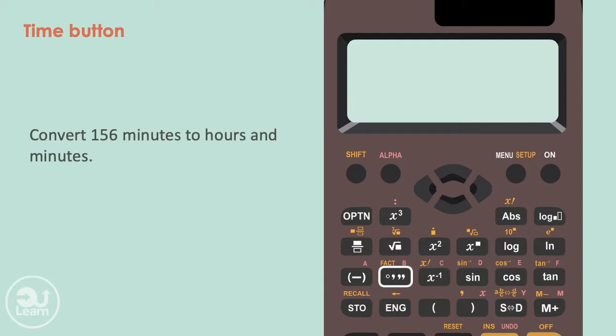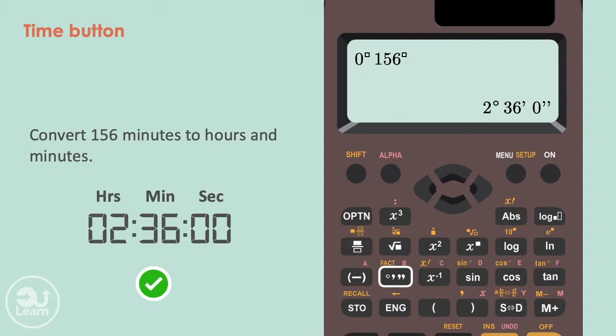Pressing equals only shows the 47 minutes. Let's say you wanted to convert 156 minutes to hours and minutes. Like previous, type 0 followed by the time button to represent 0 hours, then type 156 followed by the time button again. Pressing equals immediately converts 156 minutes to 2 hours and 36 minutes.